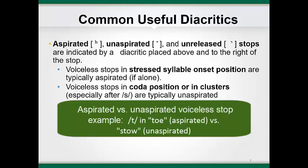Listen to the difference between the T in TOE and the T in STOE. Can you hear how there's an extra puff of air after the release of the stop in TOE? This extra puff of air does not occur after the T in STOE. This puff of air is known as aspiration. It happens because the vocal folds are in the open or abducted state at the release of the stop, and it takes a little while for voicing to begin. In an unaspirated voiceless stop, the time between release and onset of voicing is much shorter, so no extra puff of air is heard.